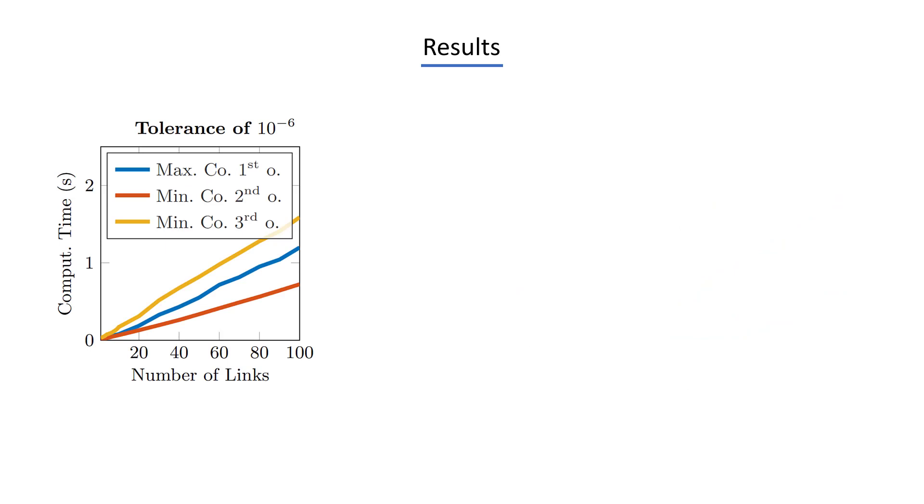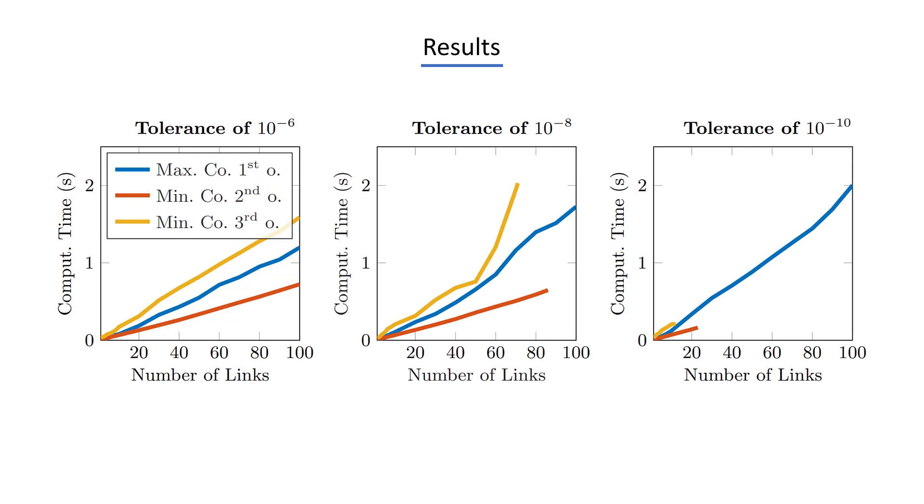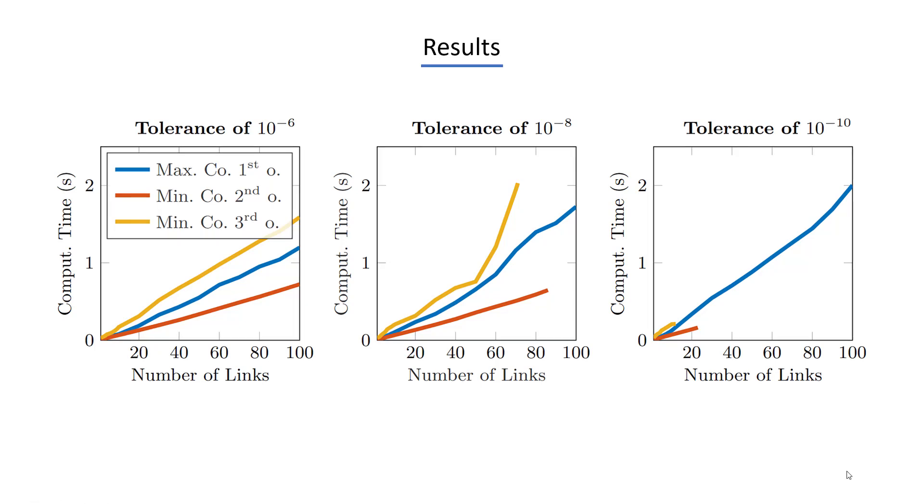We also compared our variational integrator in maximal coordinates to other variational integrators in minimal coordinates with the revolute joint pendulum setup. The minimal coordinate implementations were written in C++, and overall, again, there is no clear distinction to be made between minimal and maximal coordinates. But what's even more interesting is that if we increase the desired simulation accuracy by setting the tolerances lower, our algorithm performed well even for the lower tolerances, while the other implementations had some issues for larger systems, and at some point failed to find solutions, which could indicate that maximal coordinates might be more numerically robust. This is also supported by the next experiment.